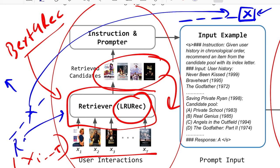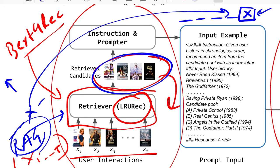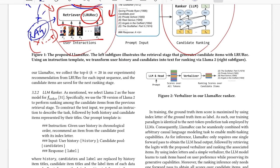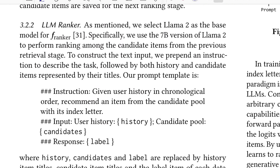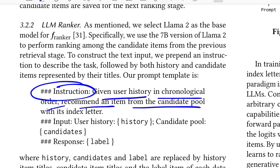You can also employ any RAG-based system at this point — as simple as saying, I've watched these movies, what should I likely see next? Based on the items set or user profiles, you can build a RAG system that retrieves the top-K candidates. In their implementation using LRU-REC, they use top-20 candidates, which are then passed to the instructor and prompter module. This module crafts a prompt using a template: an instruction is given user history in chronological order, recommend an item from the candidate pool with its index letter.